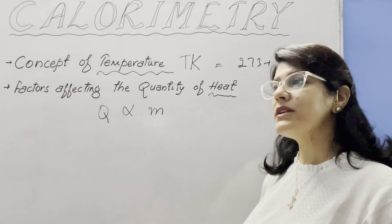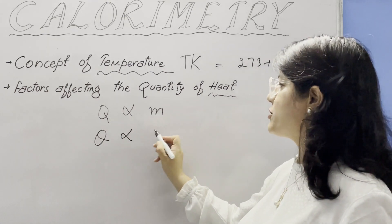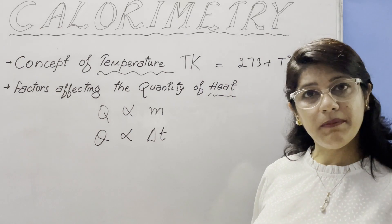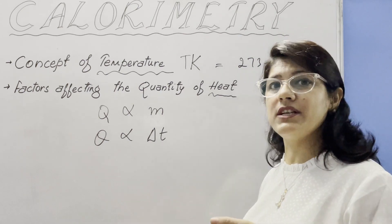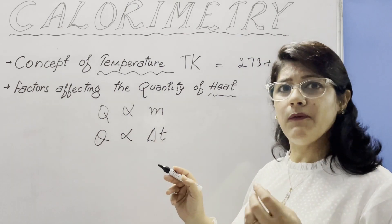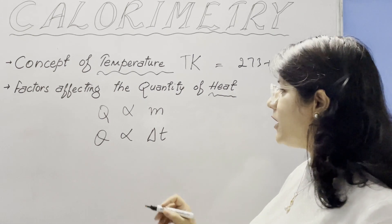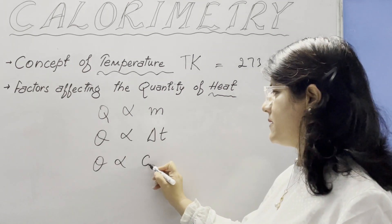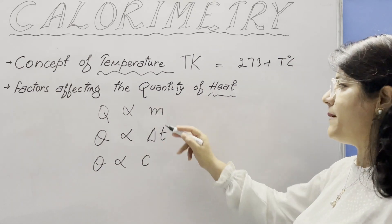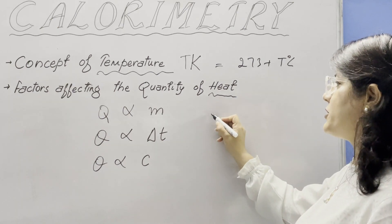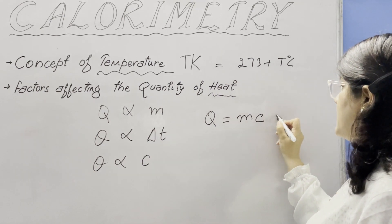More the mass of the body, the more is the quantity of heat required to change the temperature. Next, heat is directly proportional to the change in temperature — considering the initial and final temperatures gives us the change in temperature. So heat depends on change in temperature; less change in temperature means less heat energy is needed. The third parameter is specific heat capacity. The three parameters on which quantity of heat depends are M, C, and delta T. So the formula for heat used in numericals is Q = MCΔt.